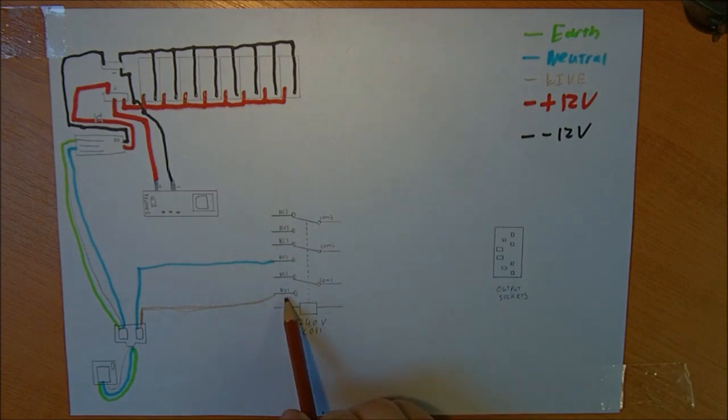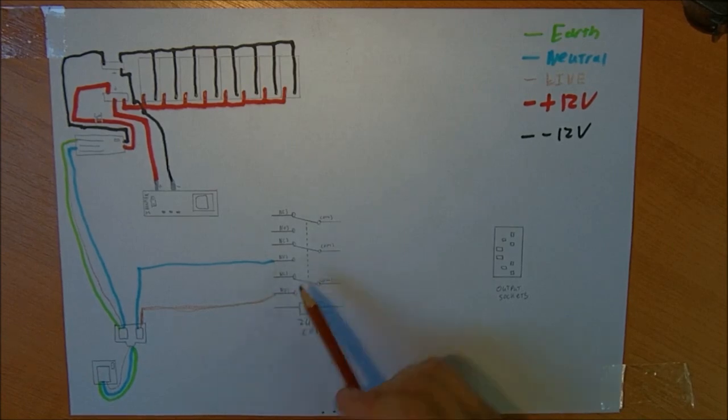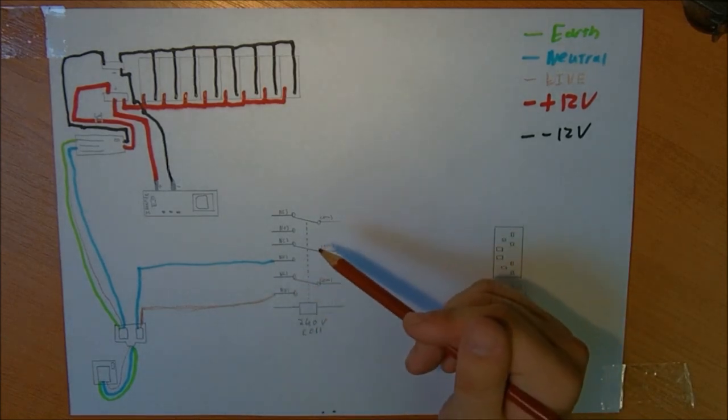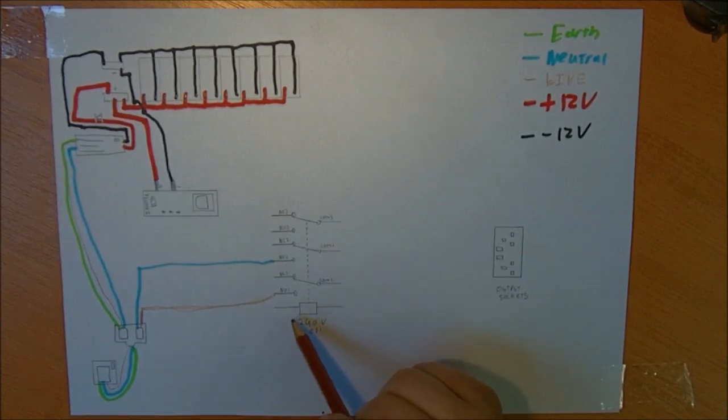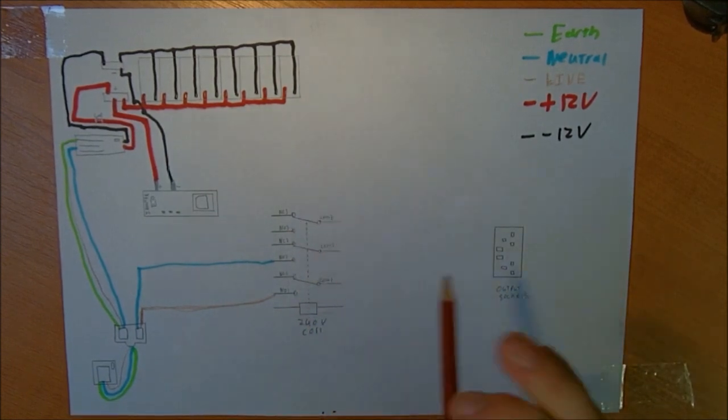So this float charger will overcome the draw of the inverter and it will keep the batteries evened out voltage wise. NO means normally open and NC means normally closed. And that's just, these are switches in the relay. They're spring loaded to the normally closed position. when the coil gets energised, it will turn into an electromagnet and pull all these switches to the normally open one. Like that.